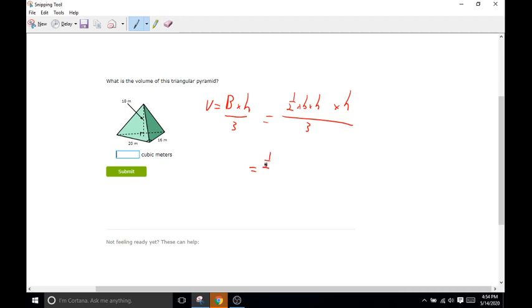So we have 1 half. What is the base there? The base is going to be 20 times 16. And the height of the entire shape is 18, and then all over our 3. I'm going to simplify some stuff down here. We'll do 1 half times 20 is 10, so 10 times 16, and then times 18 over 3 is just 6. So I'm going to simplify that down to 6. So it's 10 times 16 times 6. I'm going to simplify that down further and go 10 times 16 is 160, so 160 times 6.